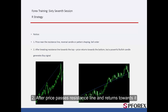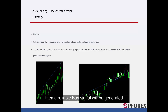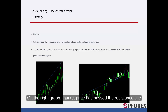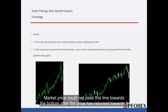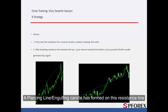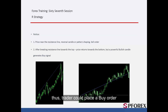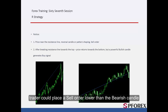After price passes the resistance line and returns towards it, if a powerful bullish candle forms on the resistance line, then a reliable buy signal will be generated. On the right graph, market price passed the resistance line but could not pass it towards the bottom after returning. A piercing line or engulfing candle formed on this resistance line, so a trader could place a buy order. Separately, after price crossed the resistance line towards the bottom, a trader could place a sell order lower than the bearish candle.